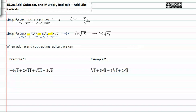When adding and subtracting radicals we can combine like radicals. In this example 1, we need to look for the radicals that match. In this case the square root of 6 and the square root of 6 match each other, while the square root of 11 and 1 square root of 11 also match each other.